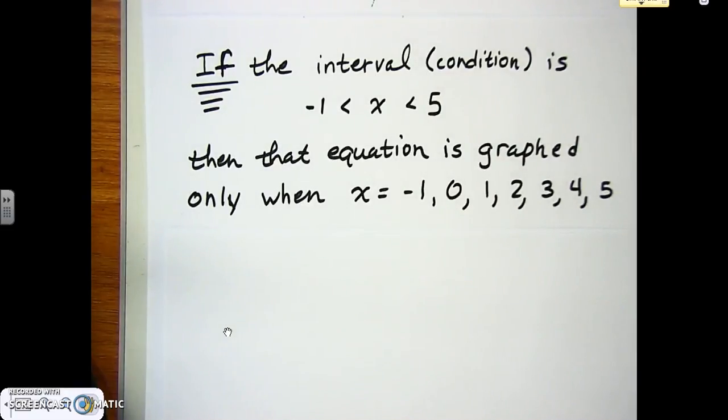This is an example—not Example 1 or anything like that, just an example. For example, if the interval or condition is between -1 and 5, they give you the equation, say 2x + 5, and then they say for...